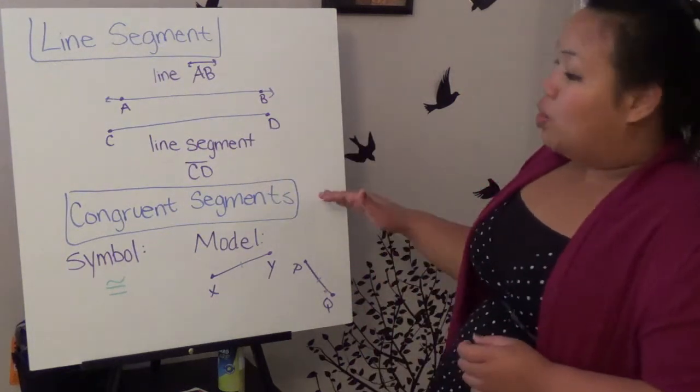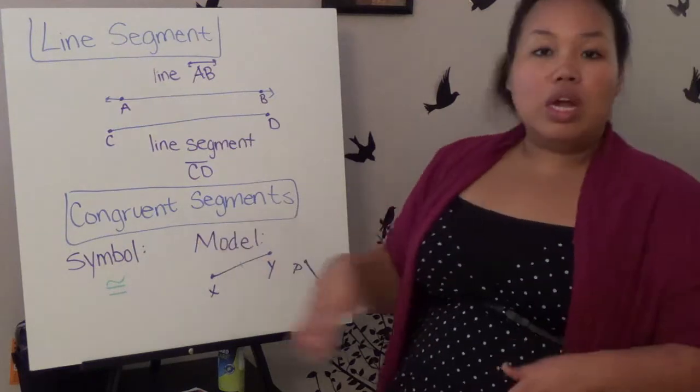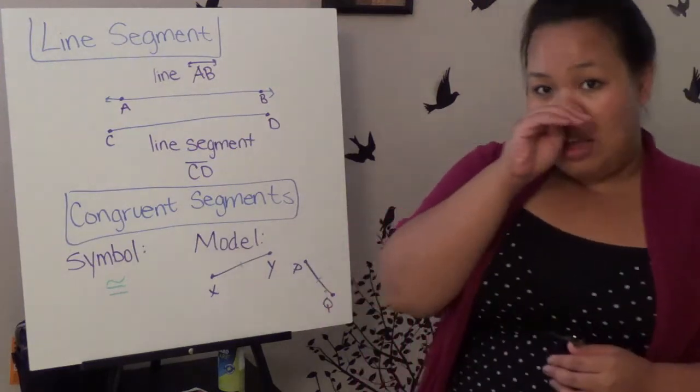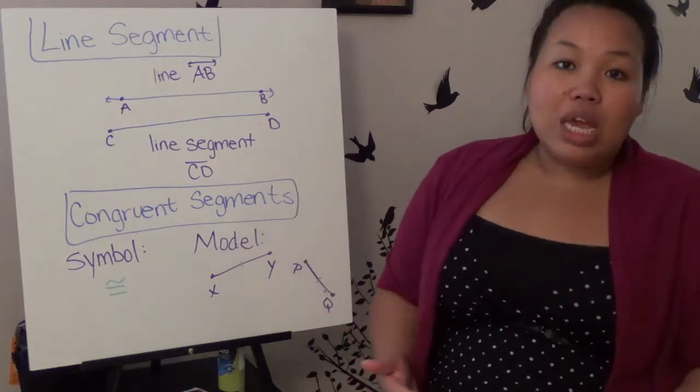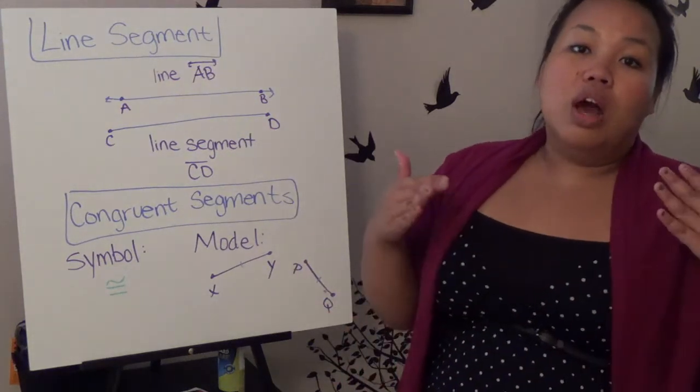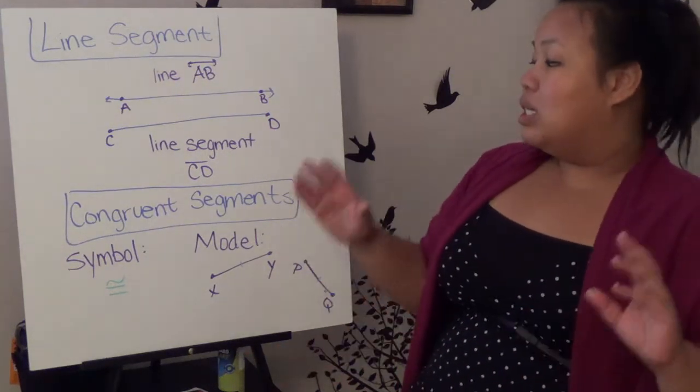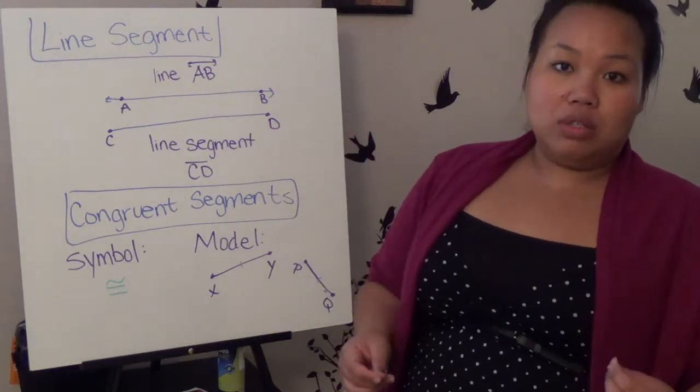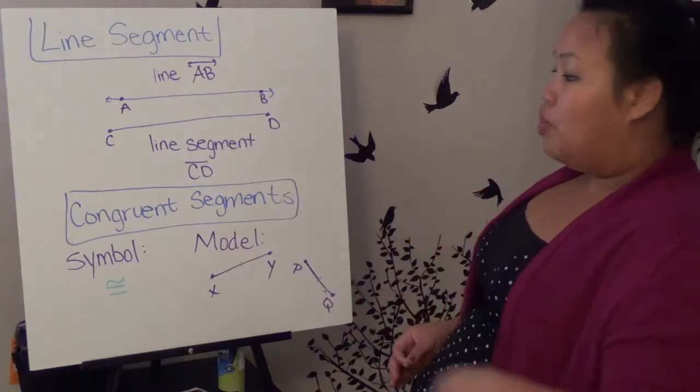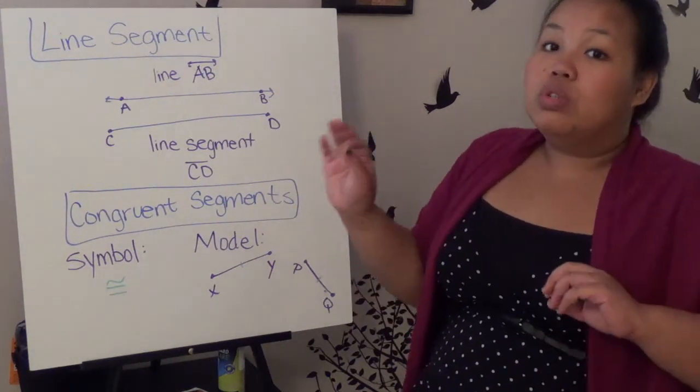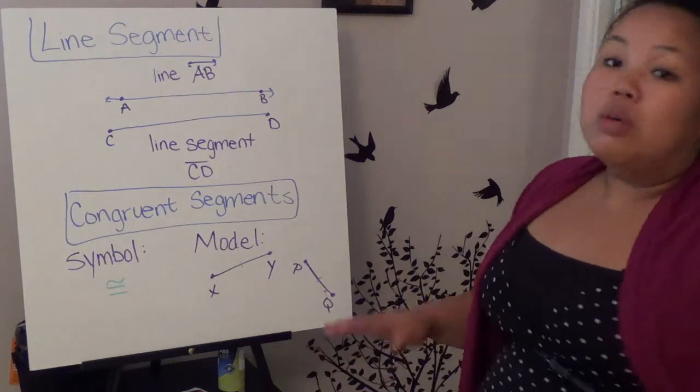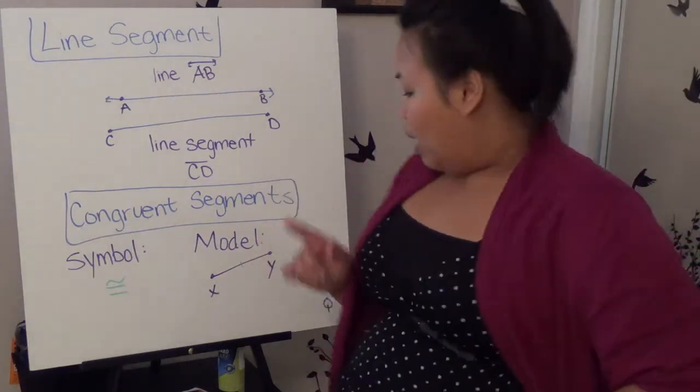The next thing is congruent segments. The term congruent, I assume your vocabulary, basically just means equal. So you'll see congruent segments, congruent shapes, you'll see the word congruent all the time, and what that basically means is that they have the same measurement. The same area, the same perimeter for when it comes to shapes, but in this case, it's basically that if one line is congruent to the other, then it means that their measurement is the same.